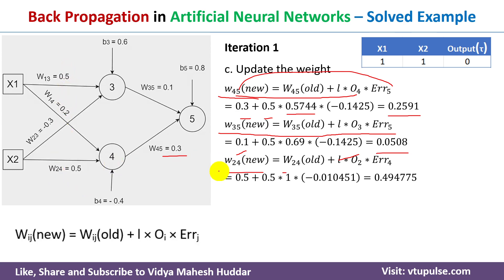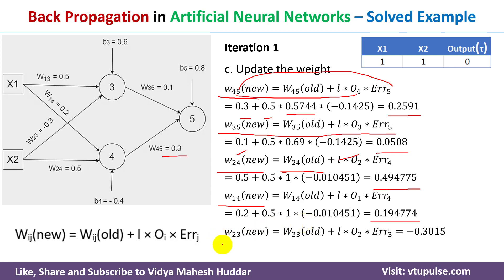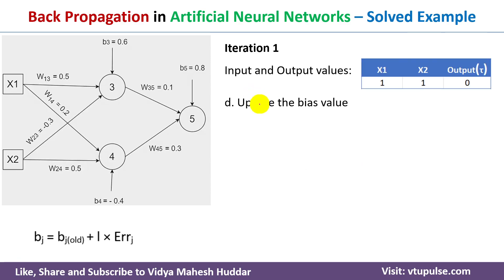For the hidden layer weights: w24(new) = w24(old) + l × o2 × error_4 = 0.494775; w14(new) = 0.194774; w23(new) = −0.3015; and w13(new) = 0.49484.